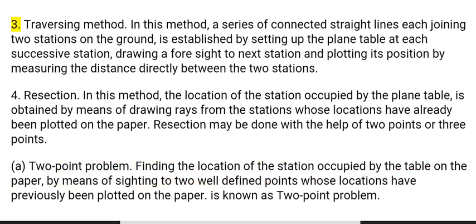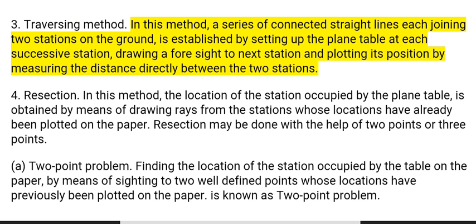3. Traversing method: In this method, a series of connected straight lines each joining two stations on the ground is established by setting up the plane table at each successive station, drawing a foresight to the next station, and plotting its position by measuring the distance directly between the two stations.